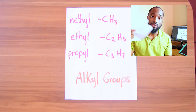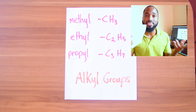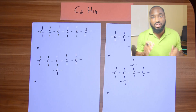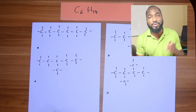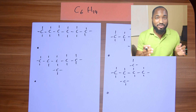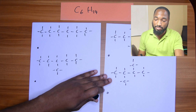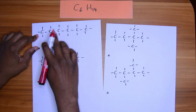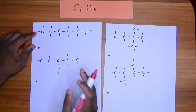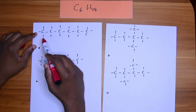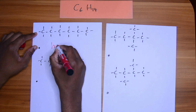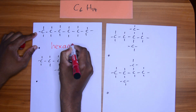Let's go to naming isomers. When we go through naming isomers, we'll cover some concepts, common mistakes students make, and understand isomers more. For this first one, we count the carbons: 1, 2, 3, 4, 5, 6 — so we're dealing with 'hex.' It's an alkane, nothing unusual, so we call it hexane.